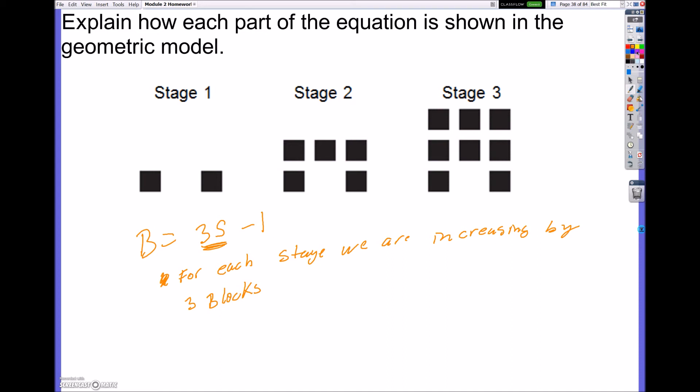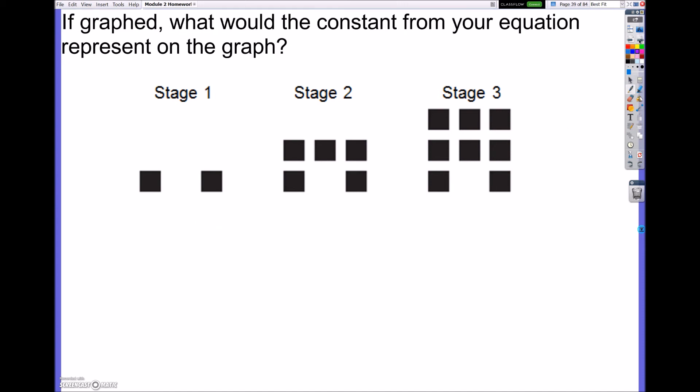Now, what about this minus 1? That part's a little trickier. This minus 1 represents how many blocks are on stage 0. So the negative 1 represents how many blocks are in stage 0. Now, we don't always do this, but we did it this time because on stage 1, that did not represent the three blocks that should have been added. So basically, we have to wait a step before we start adding those.